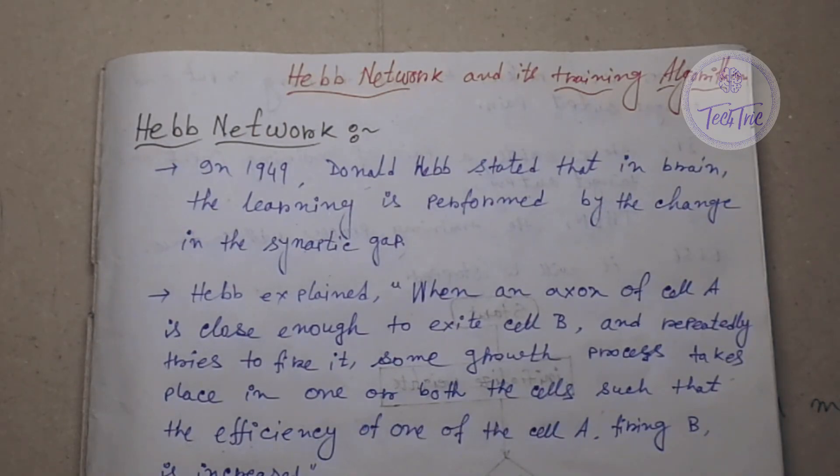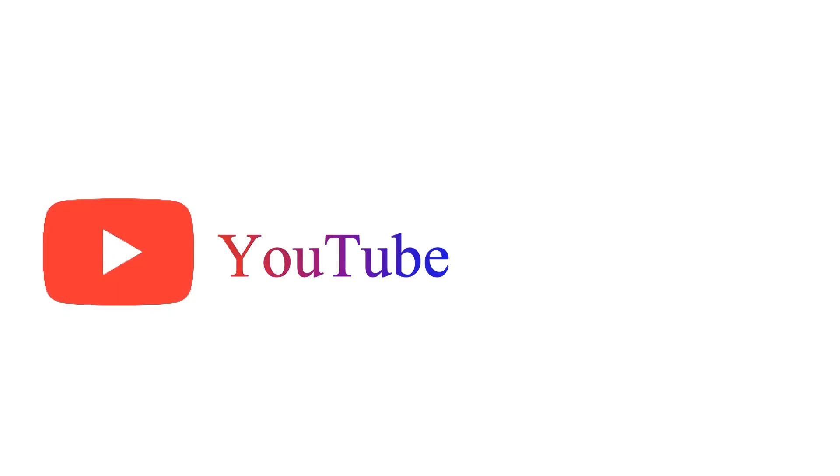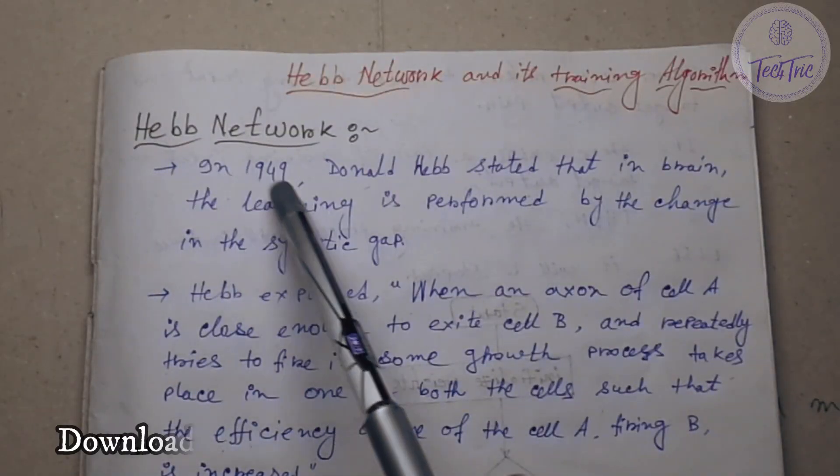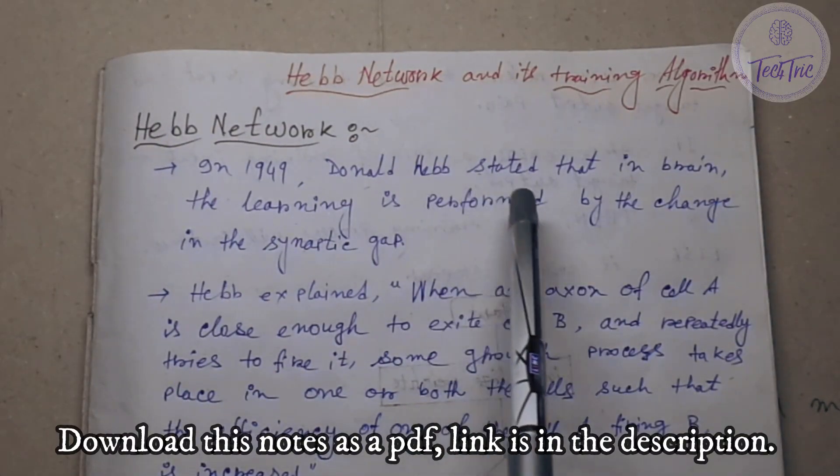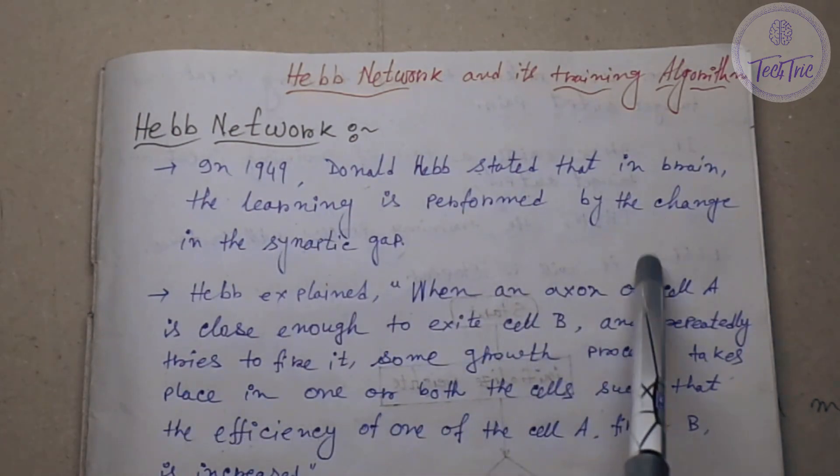Hello there, I am Shannon and you are watching TechTwik. So let's see what is Hebb network and its training algorithm. In 1949, Donald Hebb stated that in brain, the learning is performed by the change in the synaptic gap.